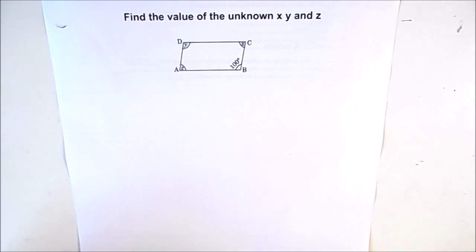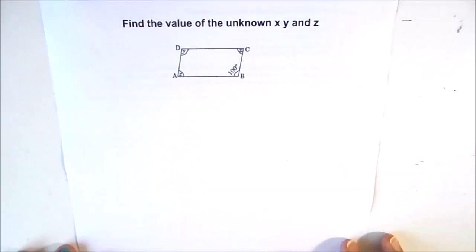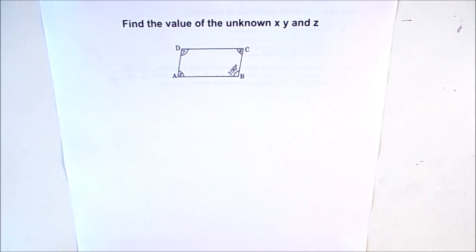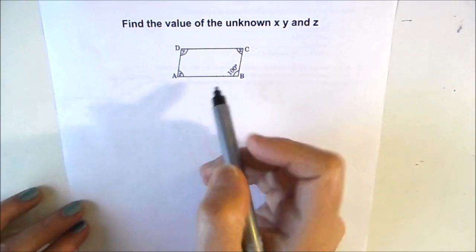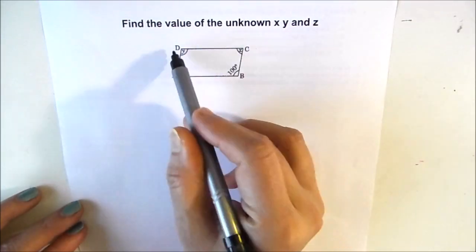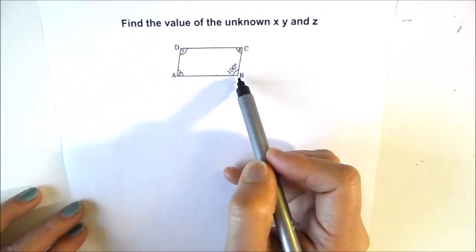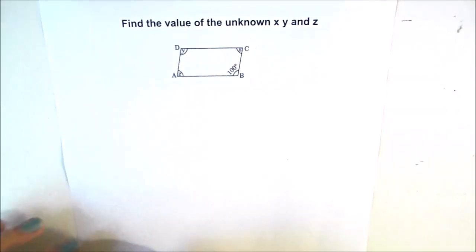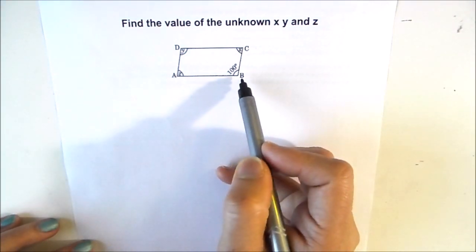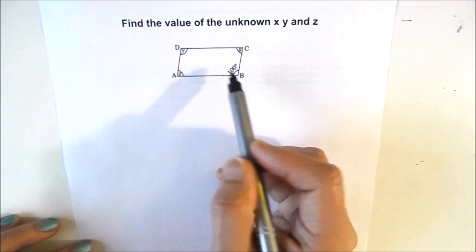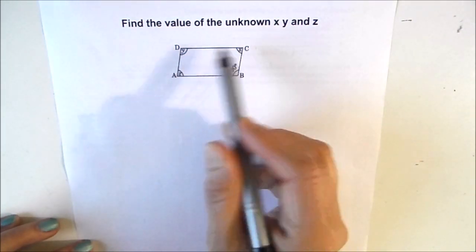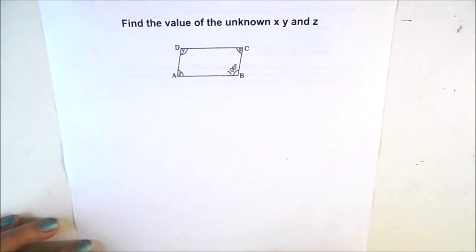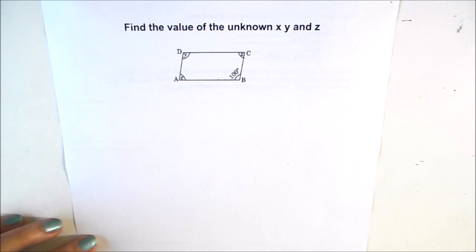Hello students, today we are going to solve one more interesting problem where we need to find the unknown angles x, y, z of the given parallelogram ABCD. We have been given only one angle — the value of angle B as 100 degrees — and the rest of the angles C, D, and A are unknown. We need to find the value of these angles.